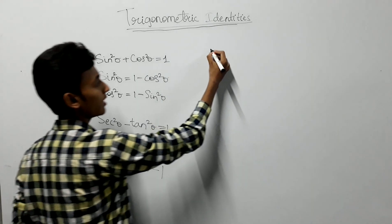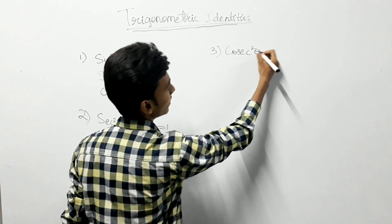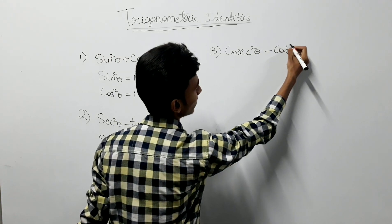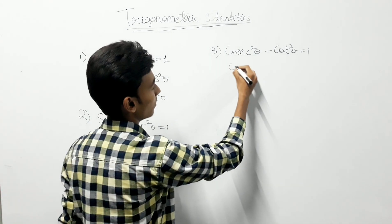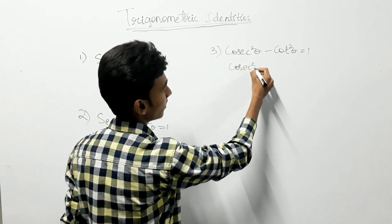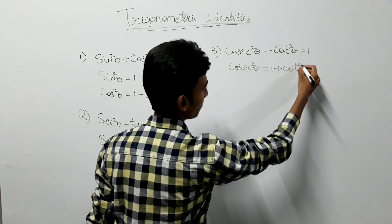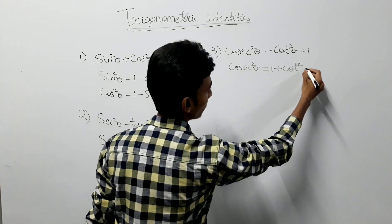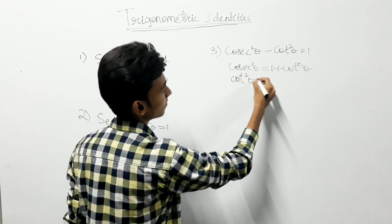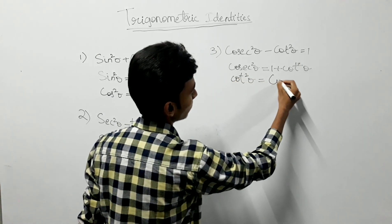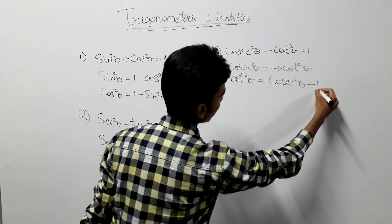The third identity is cosecant square theta minus cot square theta is equal to 1. From this, cosecant square theta can be written as 1 plus cot square theta, and cot square theta can be written as cosecant square theta minus 1.